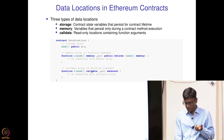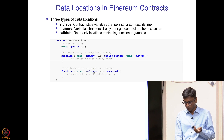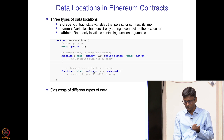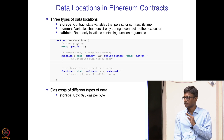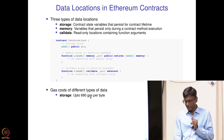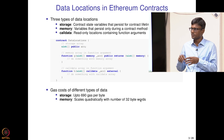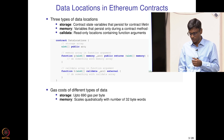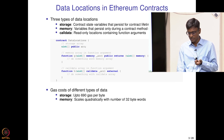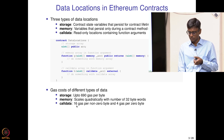The cost differences between data locations are significant. Storage costs about 690 gas per byte — it persists for the lifetime of the contract. Memory scales quadratically with the number of 32-byte words and becomes expensive as storage grows. Call data costs only 16 gas per non-zero byte and 4 gas per zero byte — almost an order of magnitude cheaper than storage. So call data is much cheaper for storing information, though it cannot be accessed after the method call completes.